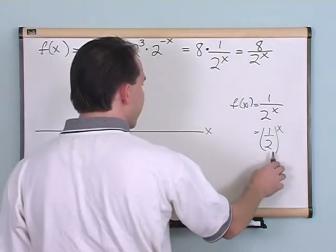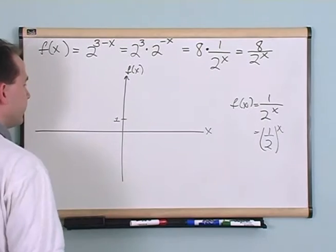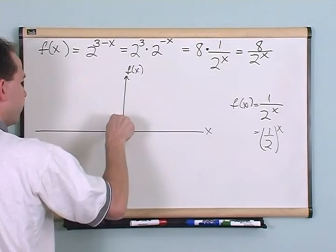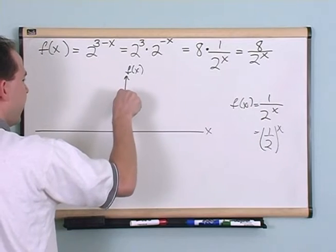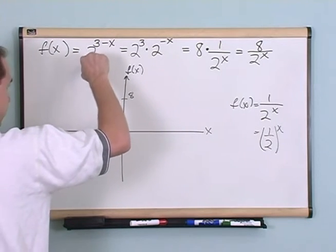But really what I have here is I have that graph multiplied by 8 because I've got an 8 on the top. So it's going to look very similar to that except let's pretend that this is 8 up here. It would go something more like this.